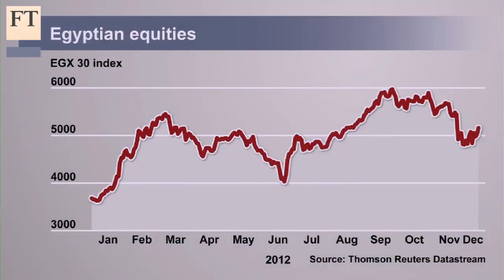Let's look at our first chart to get an idea of what's been going on in the equity market in Egypt. This is the EGX30. The ups and downs are partly driven by some of the politics in Egypt, but from the start of the year to now there's a rise from somewhere in the 3,000s to over 5,000 now. Is that a vote of confidence in Egypt?